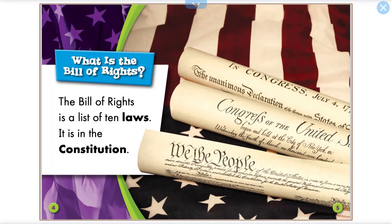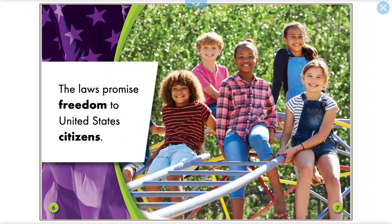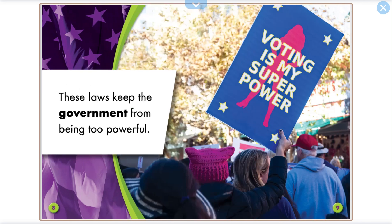What is the Bill of Rights? The Bill of Rights is a list of ten laws. It is in the Constitution. The laws promise freedom to United States citizens. These laws keep the government from being too powerful.